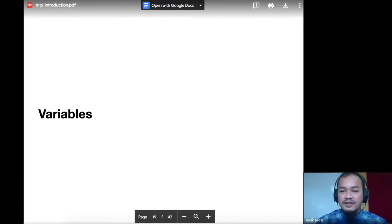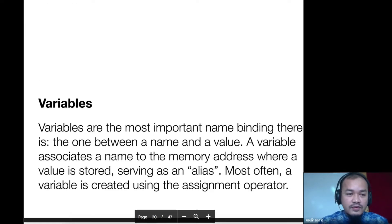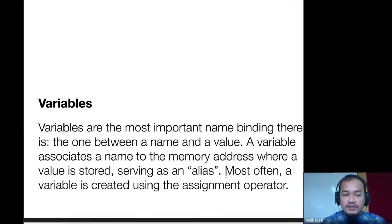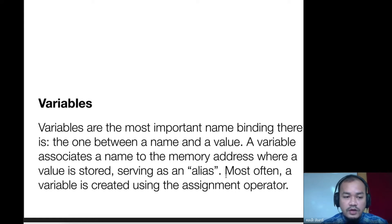A variable is one of the most important bindings — the binding between a name and a value. We want to bind or store our variable under some kind of name. A variable associates a name to the memory address where the value is stored, serving as an alias.